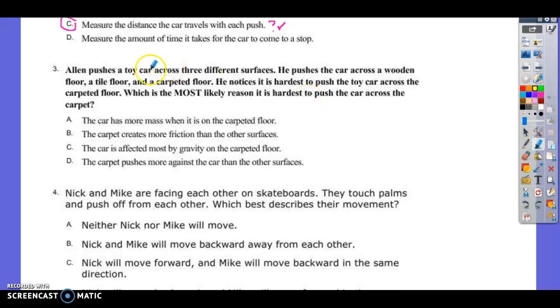Allen is pushing a car across three different surfaces. I'm already starting to think in my head, all right, three different surfaces. They're going to do something to those three different surfaces, aren't they? Because that's what we did in class. He pushes the car across a wooden floor, a tile floor, and a carpeted floor. Before I even move on, kids, what do you think is going to happen? Where's the car going to move the slowest between a wooden floor, a tile floor, and a carpeted floor, Sean? Why is the carpeted floor going to move slower? It has more friction. He notices it's harder to push the toy car across the carpeted floor. Oh, wow. We just talked about that.